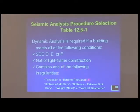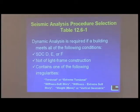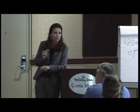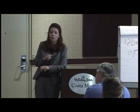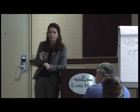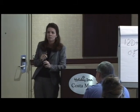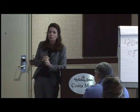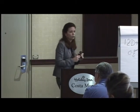And if the structure contains one of the following irregularities: torsional or extreme torsional irregularities — we're looking at horizontal irregularities. And here are the vertical irregularities: stiffness soft story, extreme soft story, weight/mass, or vertical geometric irregularities. If your building has any of those irregularities, regardless of height — even one or two stories — with a torsional irregularity, you must do a dynamic analysis in seismic design categories D through F. That's a huge change from what we're used to with the '97 UBC.